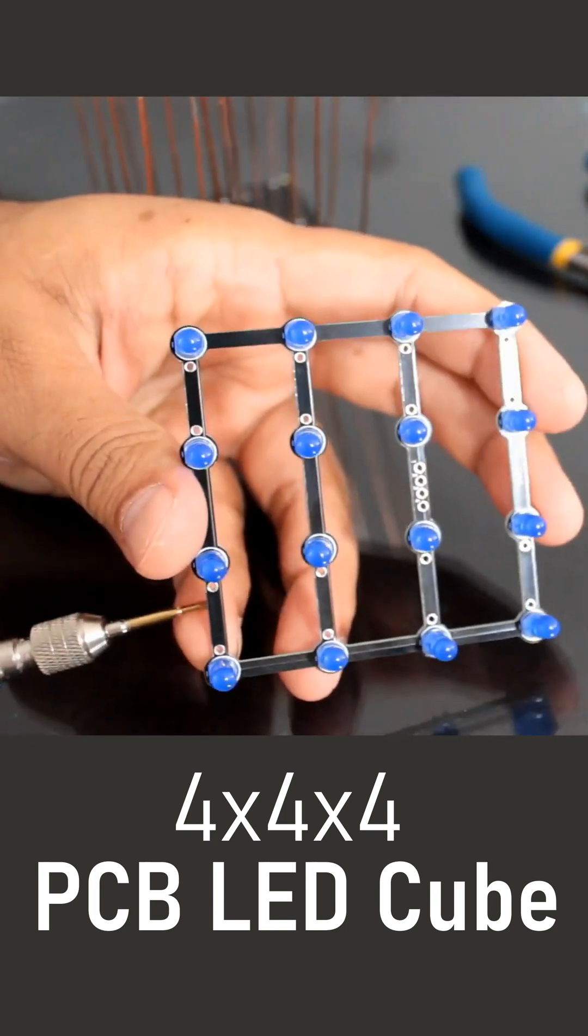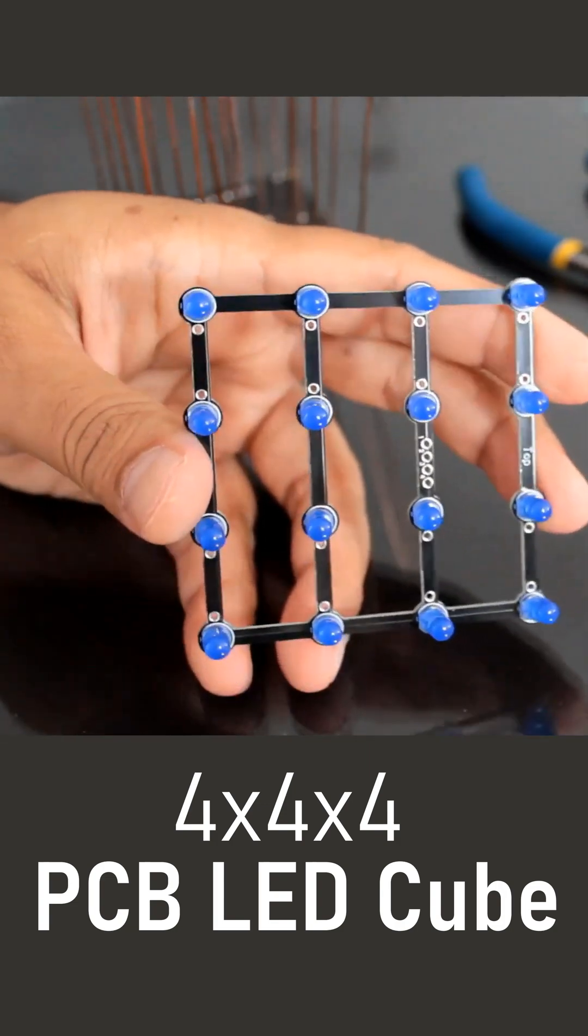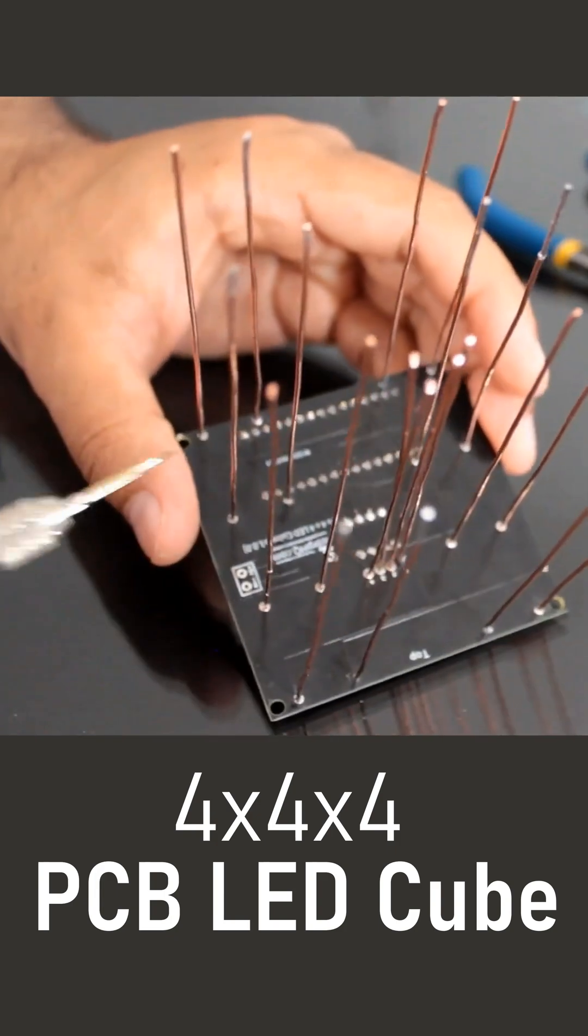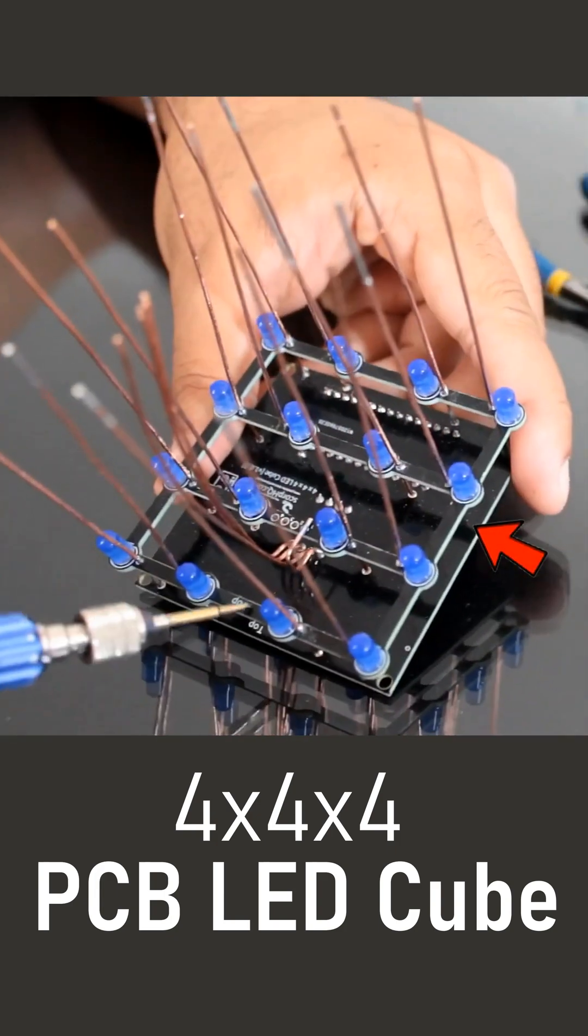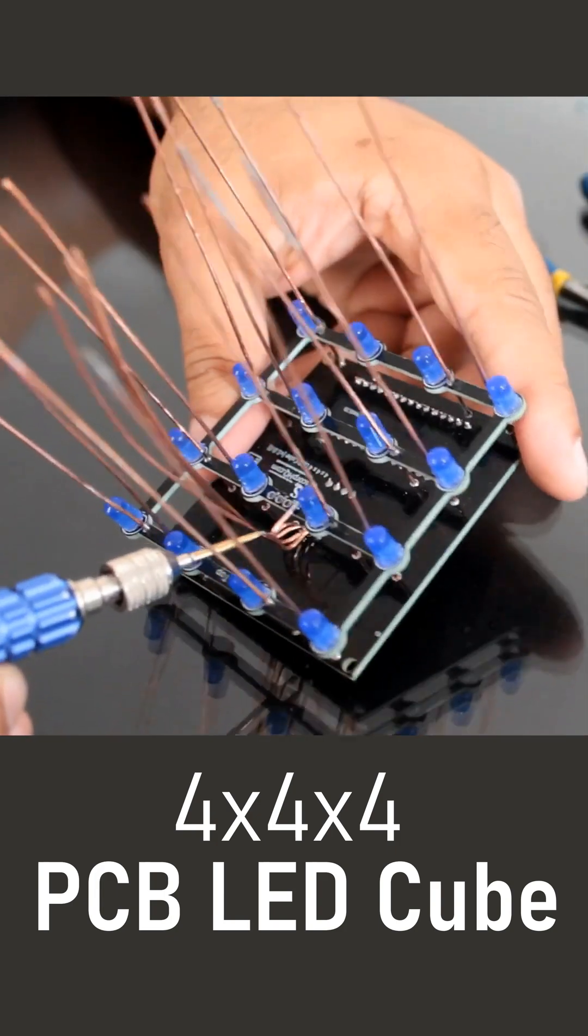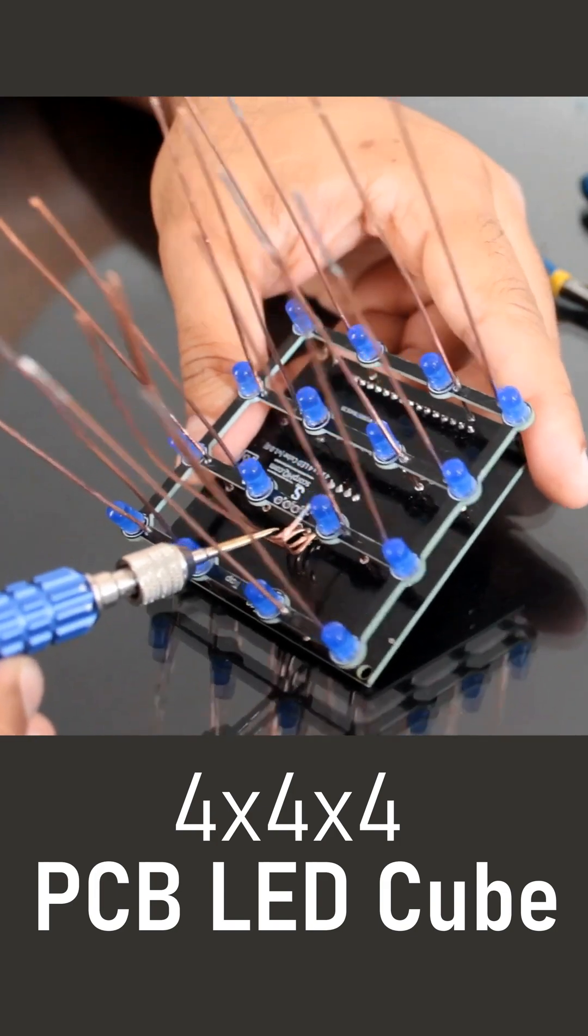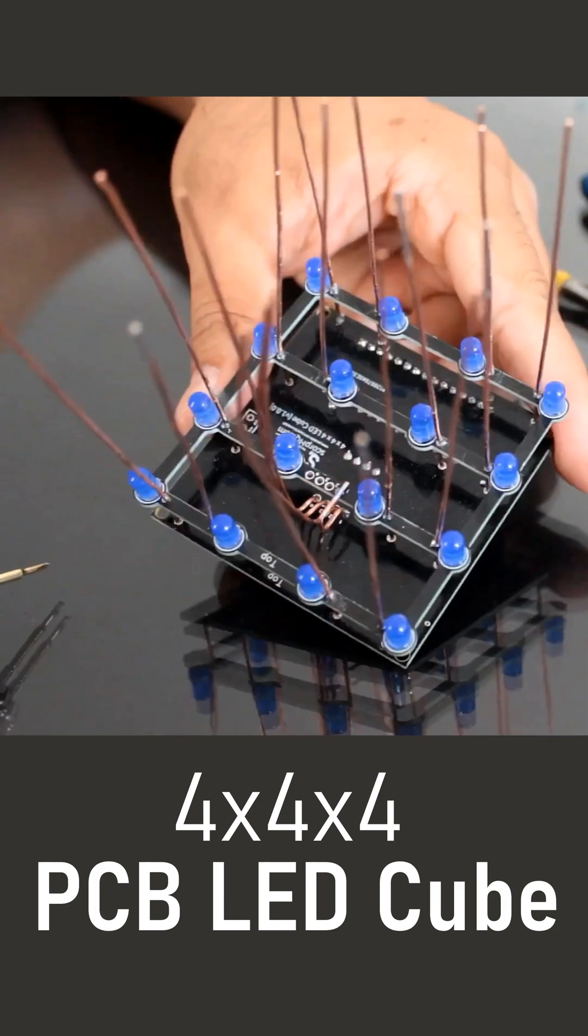After soldering the wires to the base plate, slide the first LED mesh and solder all the wires to it. Then, slide the second one and so on. I left a 1.7 cm gap between each layer and 1.2 cm gap between the first layer and the base plate.